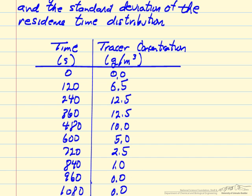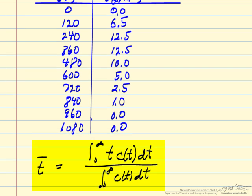Here are the data for measurement as a function of time, every 120 seconds, and the tracer concentration at low concentration measured at these times. We get the average residence time using this equation: the average time is essentially a weighted average — the integral of time times the concentration as a function of time over all times from 0 to infinity, divided by the integral of the concentration. We normalize because the average residence time should not depend on which tracer or concentration we use, as long as it's low concentration and mixes with the feed.